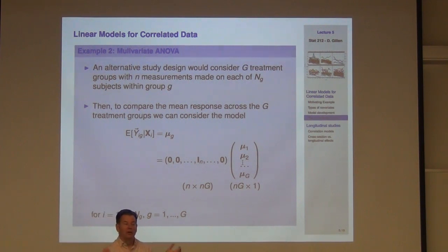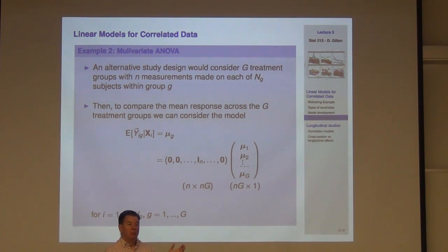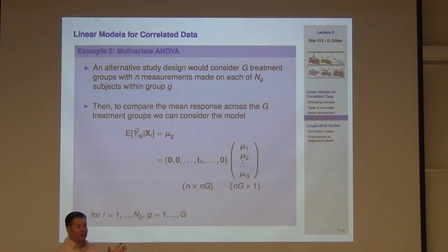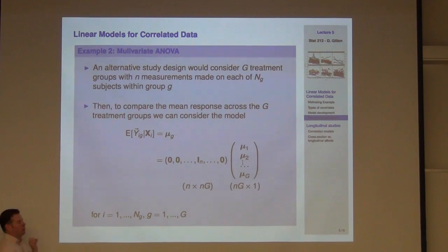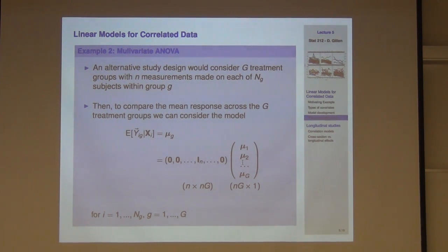For the multivariate ANOVA model, the typical approach is to implement an unstructured variance-covariance matrix. Looking at the variance of Y_ig, we have sigma_{1,1} on the diagonal and sigma_{1,2}, sigma_{1,3}, etc. on the off-diagonals. One key assumption is that this matrix does not depend on little i or little g — all individuals have the same variance-covariance matrix regardless of their treatment assignment. This is analogous to the two-sample t-test with equal variances, extended to the multivariate setting.